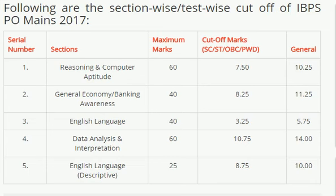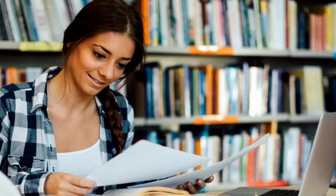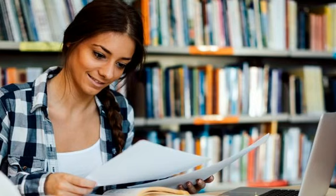The 25-mark English descriptive paper requires you to write a letter or an essay on a topic. There will be a few topics to choose from, and you select the one that suits you best. You may also be asked to write an application. Most students get average marks here — out of 25, the maximum I have seen is 21 marks. Typically you can expect 15 to 18 marks.